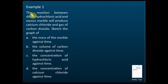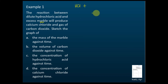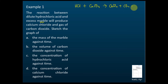Let's look at Example 1. The reaction is between dilute hydrochloric acid (HCl) and excess marble. Marble, or limestone, is calcium carbonate (CaCO₃). The products are calcium chloride, carbon dioxide gas, and water. To balance the equation, we place a 2 in front of HCl. We are told that the marble is in excess.